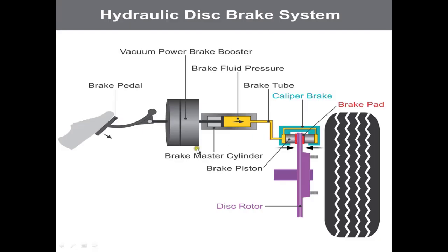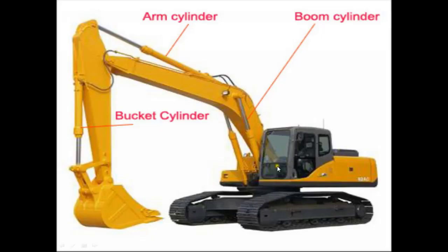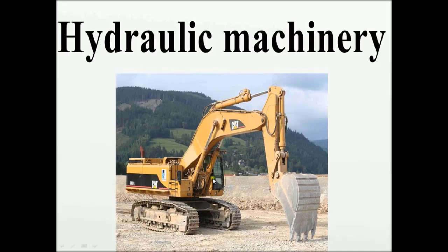In another diagram, the disc rotor has been deliberately removed so you can see how it works. These are all the functioning parts of the hydraulic disc brakes. You can also see other hydraulic machines like the bucket cylinder, arm cylinder, and boom cylinder — the kind used in mechanical diggers seen at road construction or other construction sites.